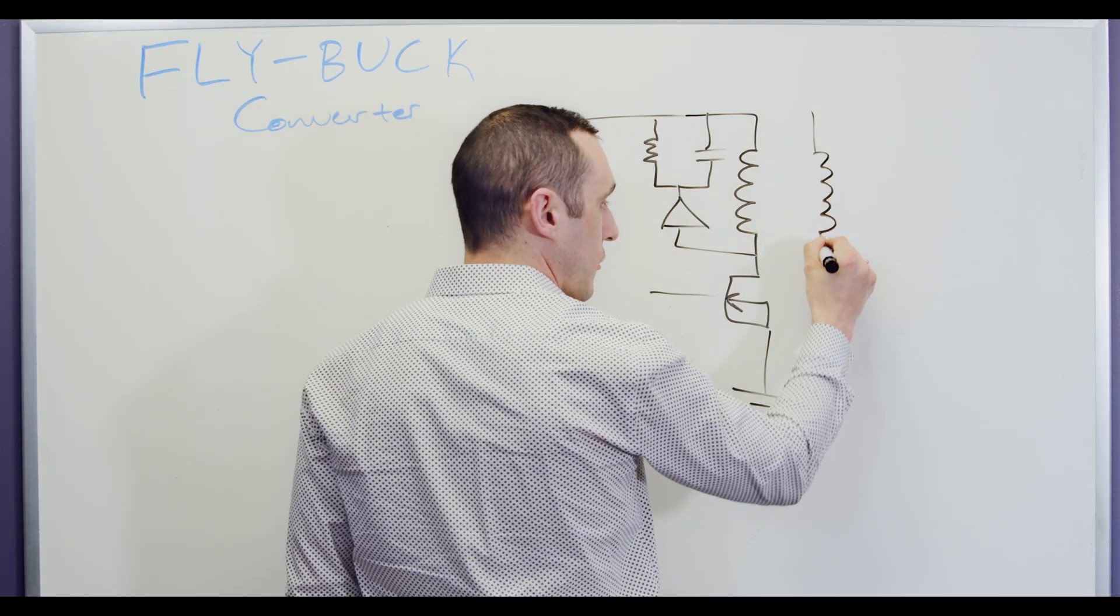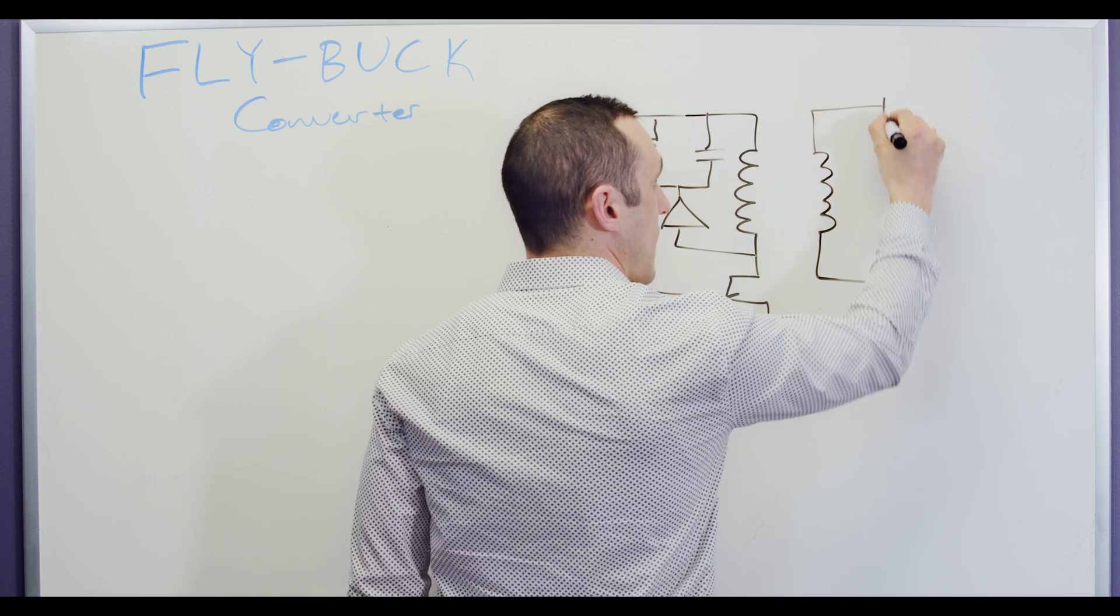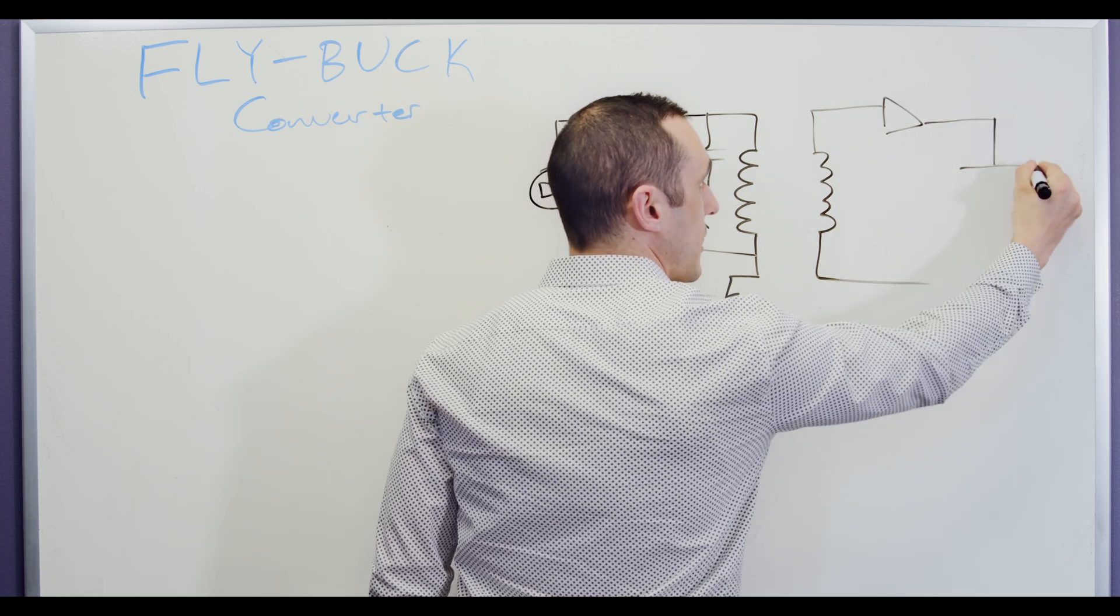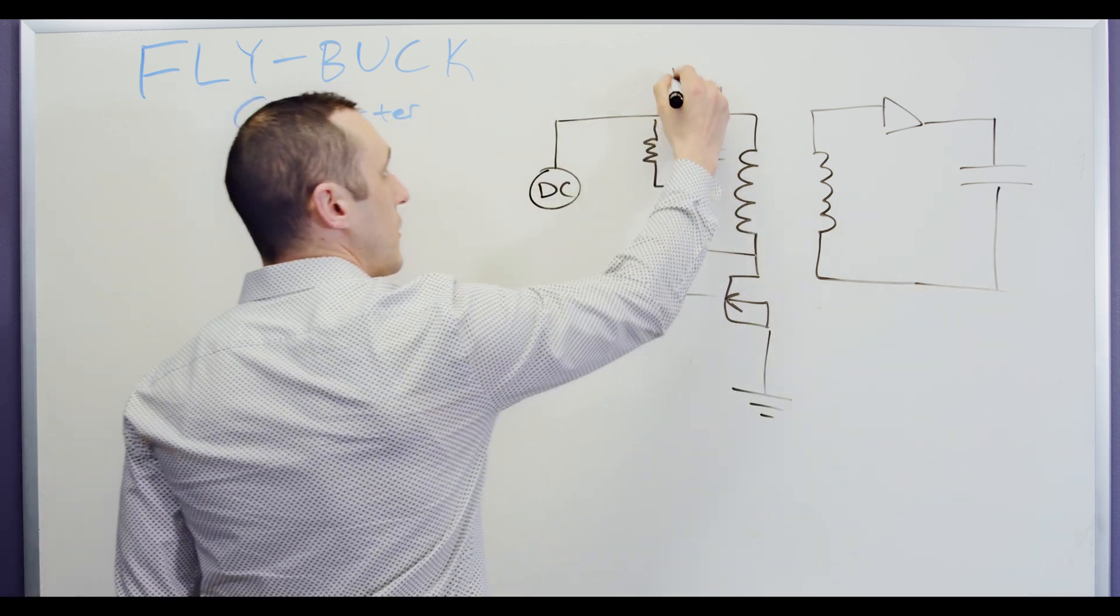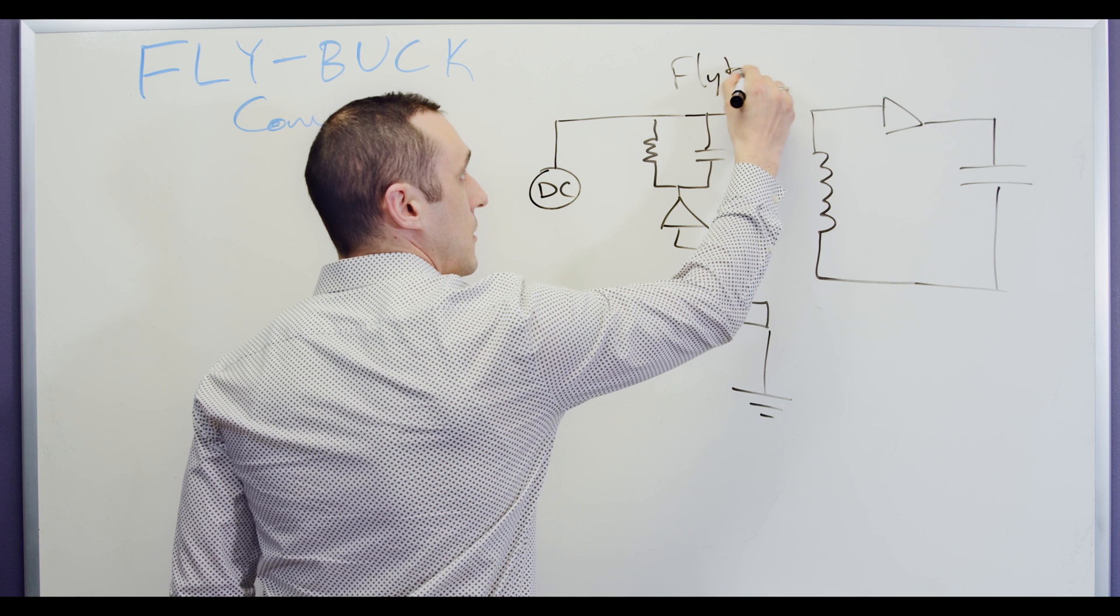And then this induces a current in a secondary coil over here on this side. We have a diode, and then we have a capacitor here, and then we have our output voltage. So this is our typical flyback converter.